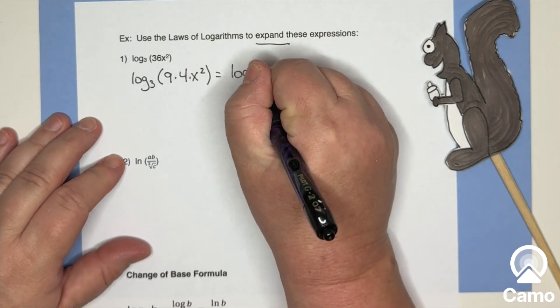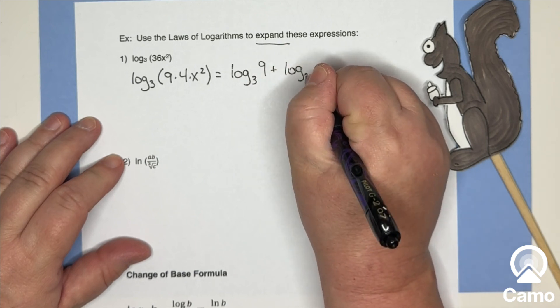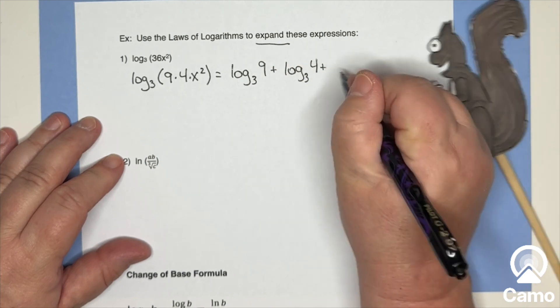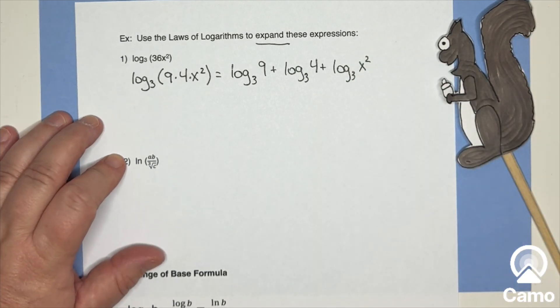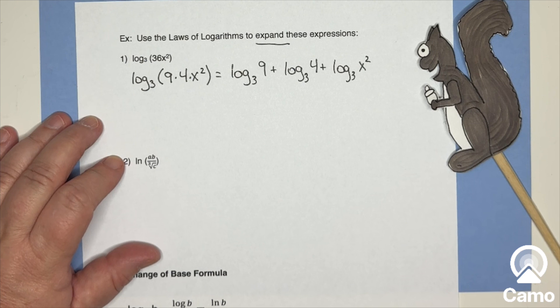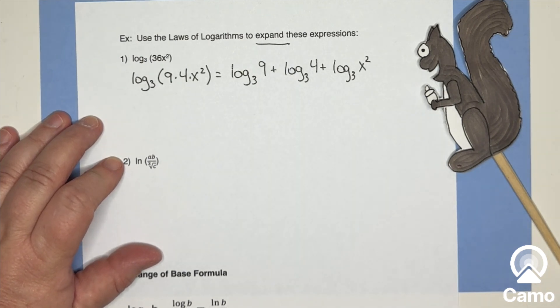What does that mean? So if I have log base three of nine times four times x squared, then that means I've got log base three of nine plus log base three of four plus log base three of x squared. And I know everyone's looking into that going, oh my goodness, thank goodness we wrote it like that. That's so much better. It isn't necessarily better, but we are expanding it and we're practicing the formula.